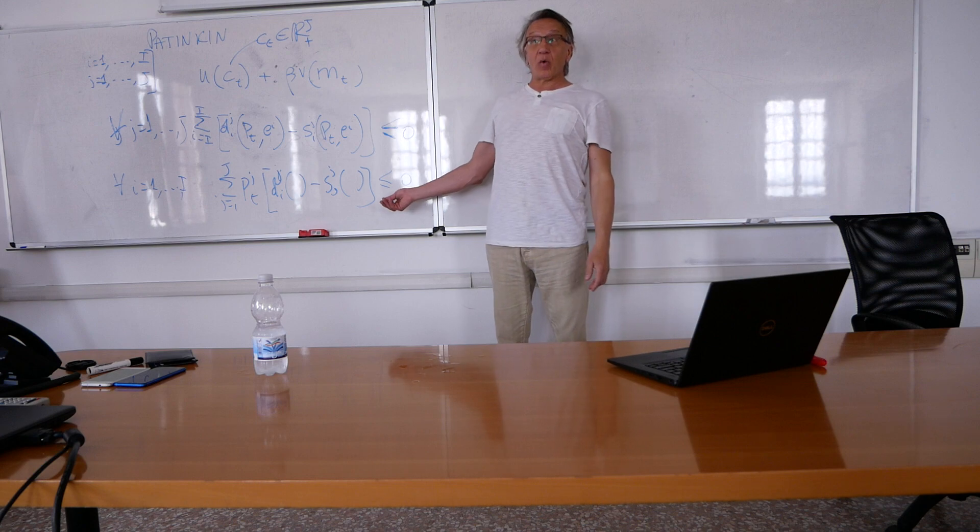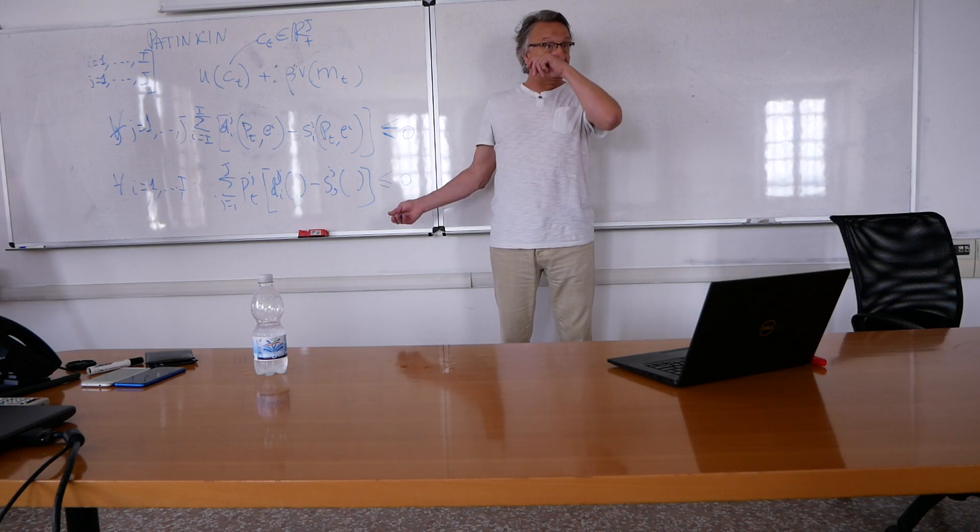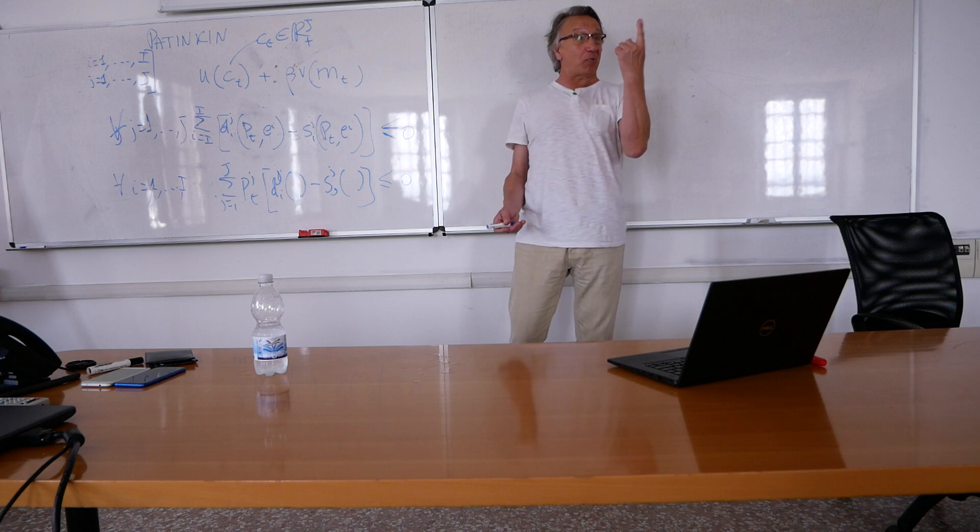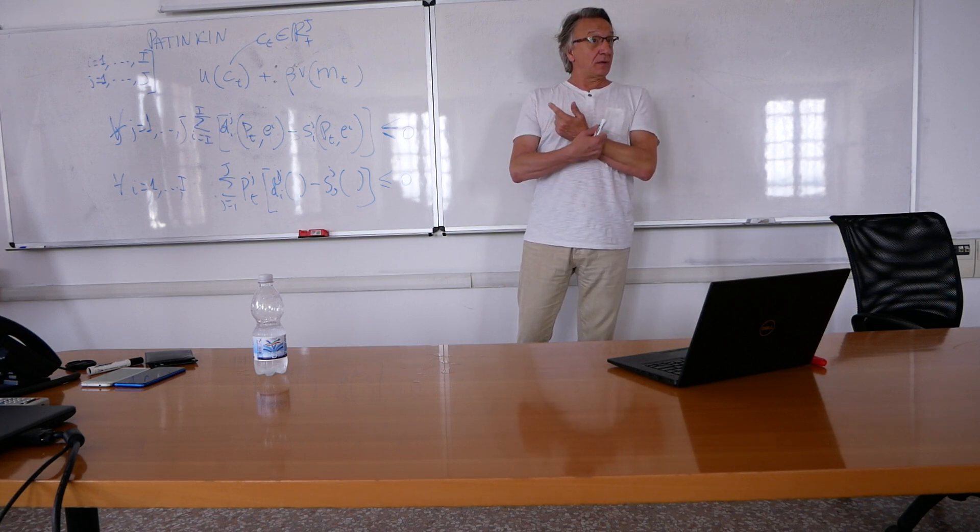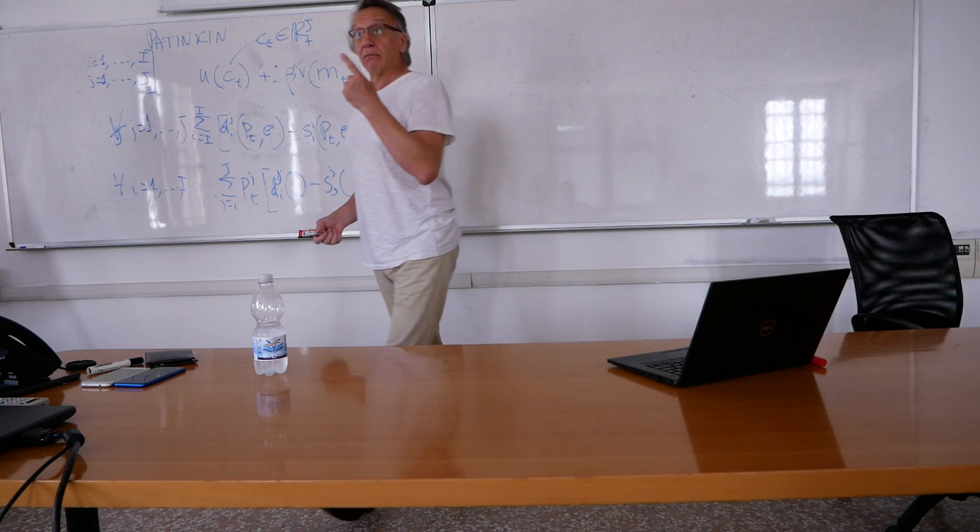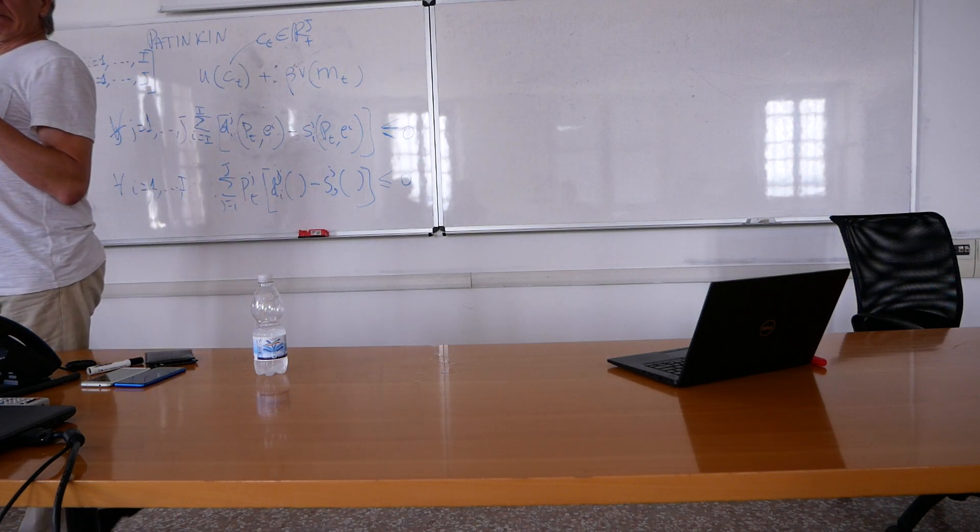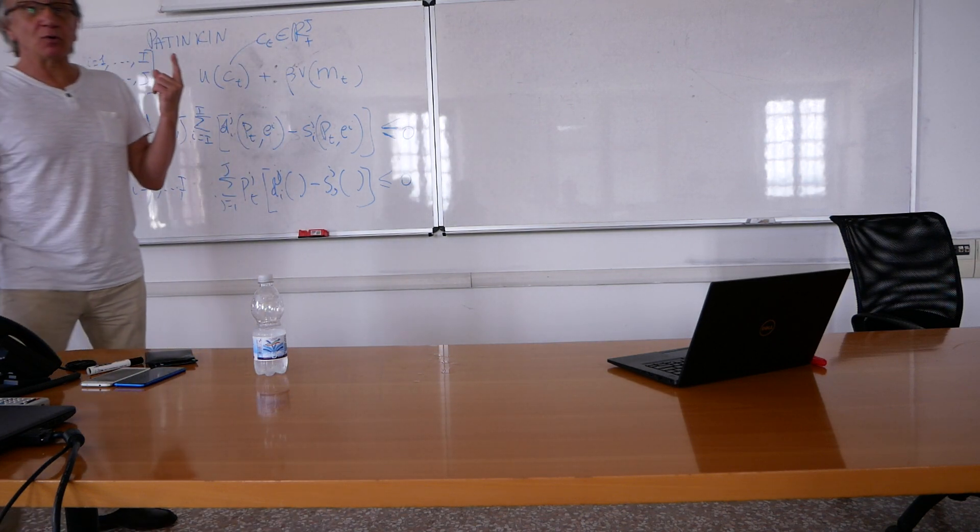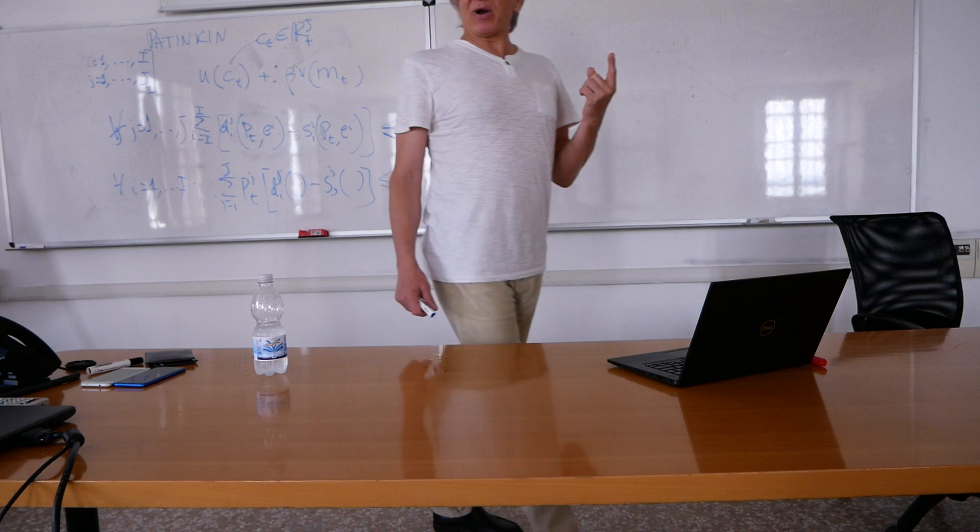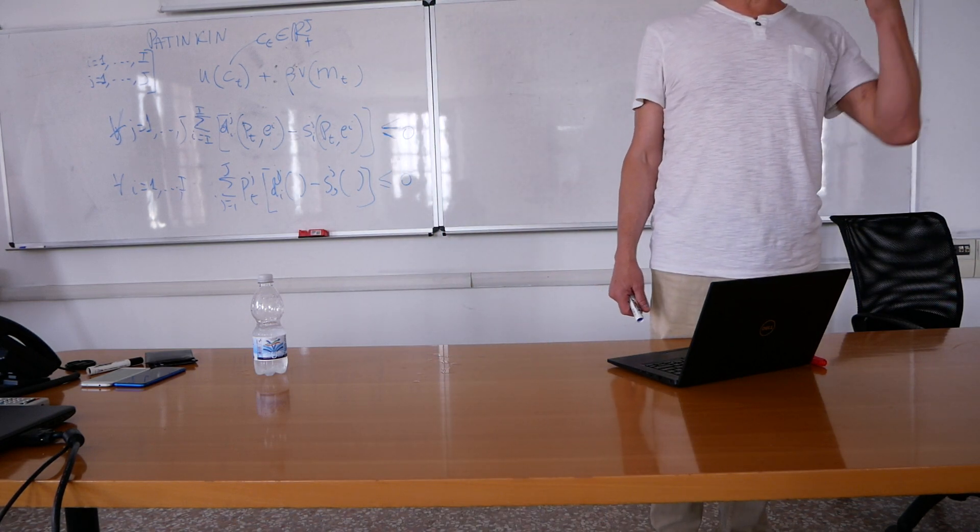In the standard model without money, I write the budget constraint in this form and I set what? I set one price as a numeraire. Right? I say, good number one, Castraure Santerasmo, their price is one. So everything is expressed in Castraure Santerasmo.